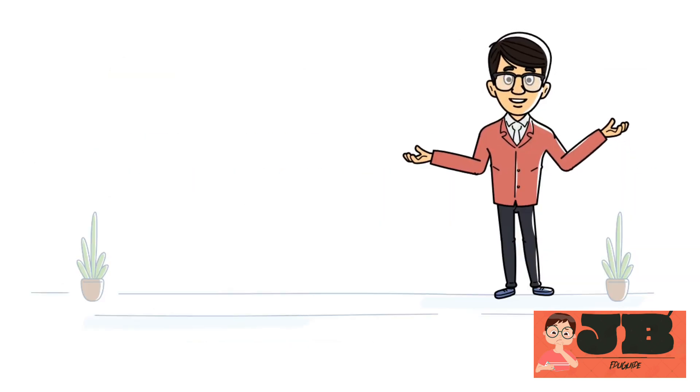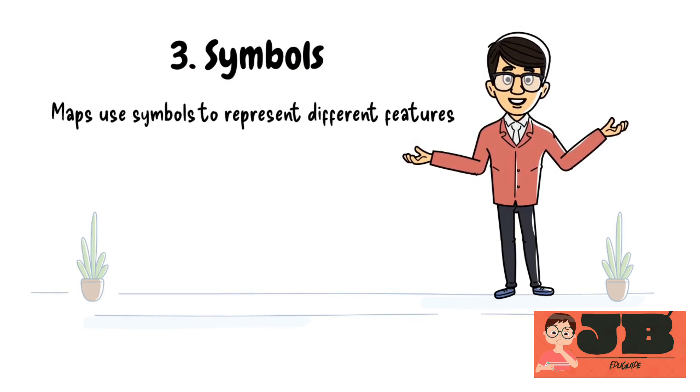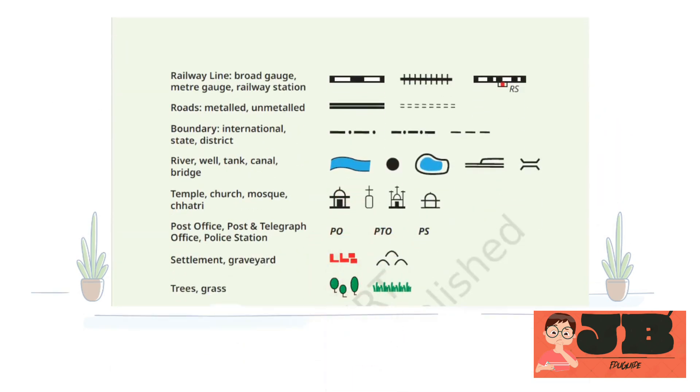Most important components or part of map is symbols. Maps use symbols to represent different features. For example, a small drawing of a tree might represent a forest, or a dotted line might represent a road. These symbols are explained in the map's legend or key.